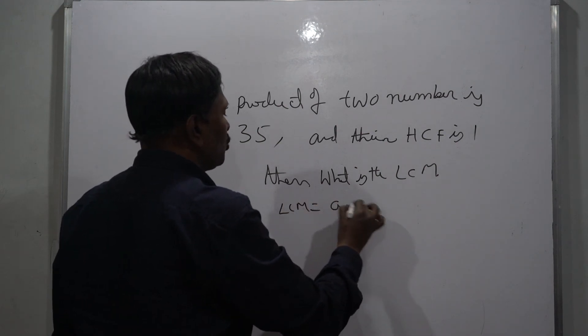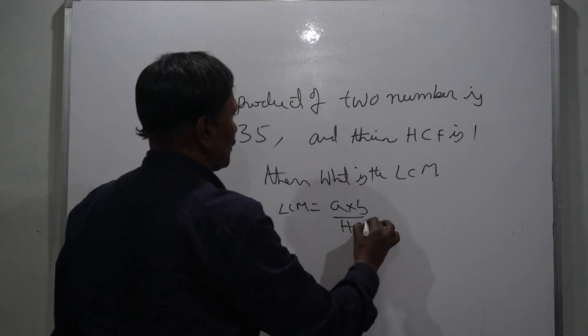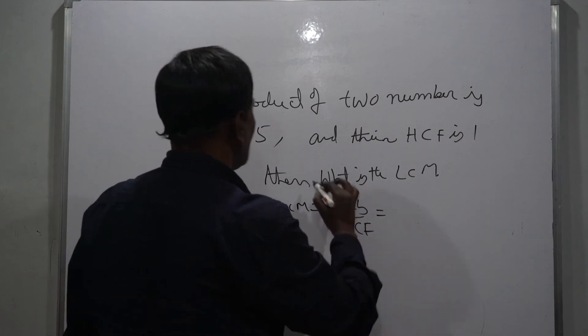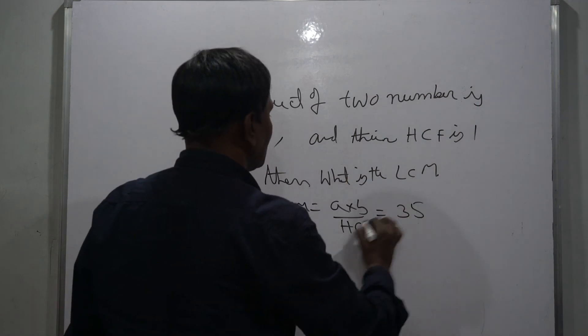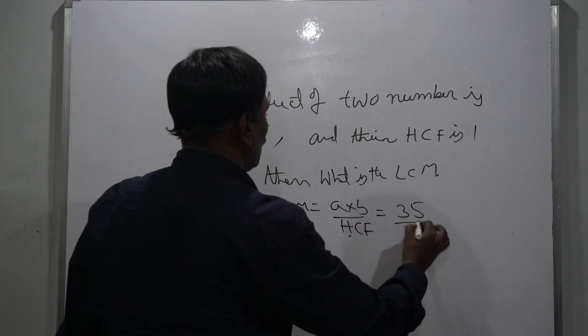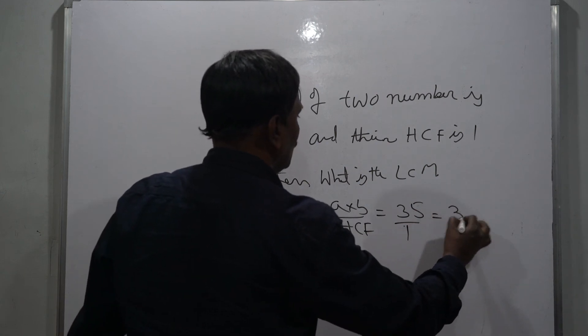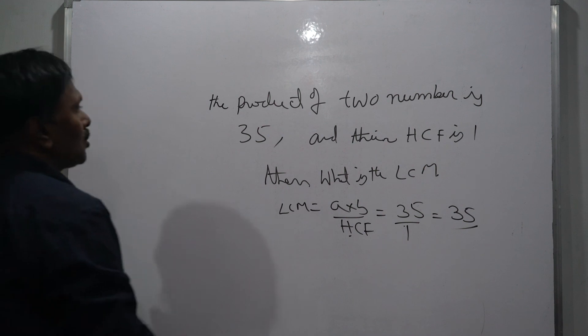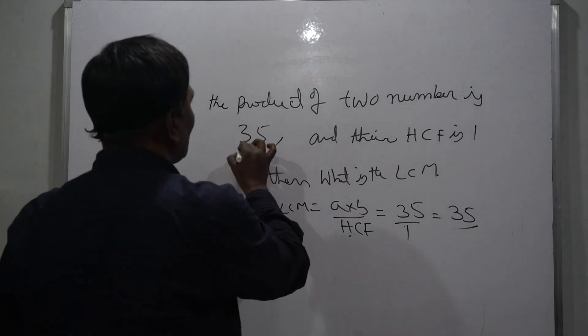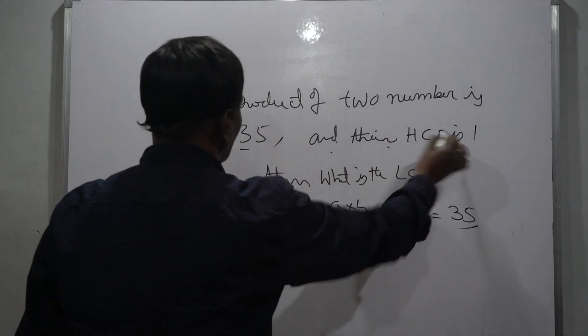So a into b is 35, HCF is how much? 1. So LCM is also 35. The product of the two numbers is 35 and their HCF is 1, then what is the LCM? LCM is equal to a into b by HCF, so 35 by 1 is equal to 35.